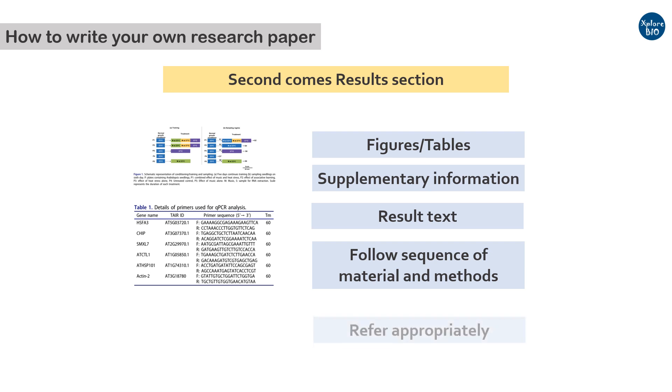Follow the same sequence for the results as you did for the materials and methods. Refer and provide sequential number to the figures and tables at the suitable places in the text so that the reader can correlate the results section with what is given in the figures, tables or supplementary information. Always check the journal guidelines for maximum figure or table limits, the length of the manuscript. Based upon this, you may include or exclude or shift the less significant results to the supplementary information.